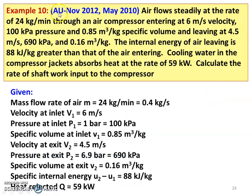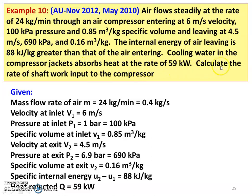Next — example number 10 from November 2012 and May 2010 question paper. Air flows steadily at 24 kg per minute through an air compressor, entering at 6 m/s velocity, 100 kPa pressure, and 0.85 m³/kg specific volume, and leaving at 4.5 m/s, 690 kPa, and 0.16 m³/kg. The internal energy of air leaving is 88 kJ/kg greater than that of air entering. Cooling water in the compressor jacket absorbs heat at 59 kW. Calculate the rate of shaft work input to the compressor.